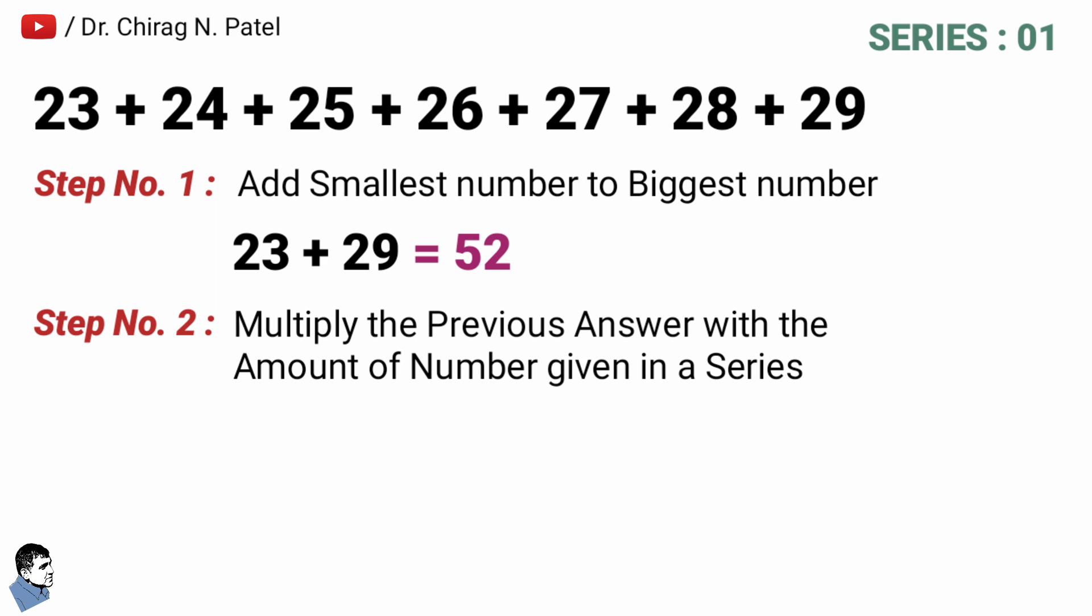Now in step number two, it is multiplying the previous answer with amount of numbers in the given series. Here in given series total numbers are 7, and those 7 numbers are from 23 to 29. So 52 × 7 is equal to 364.